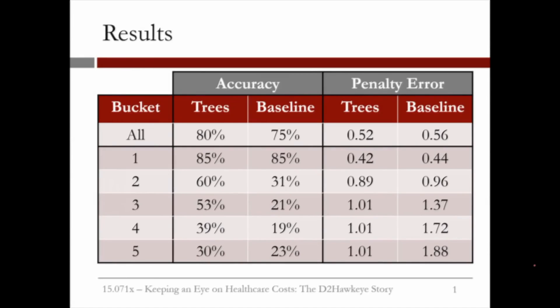Let us discuss the results of the classification tree model. We first observe that the overall accuracy of the method, regarding the percentage that it accurately predicts, is 80% compared to 75% of the baseline. But notice that this is done in an interesting way.